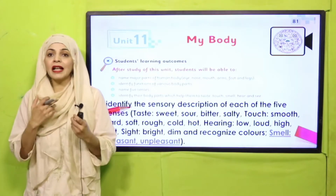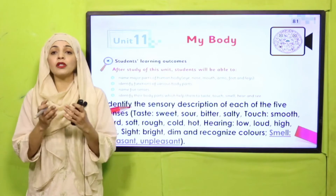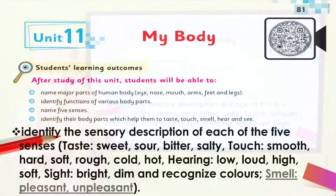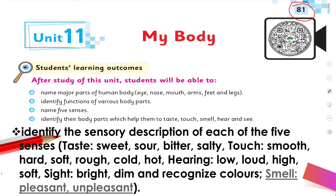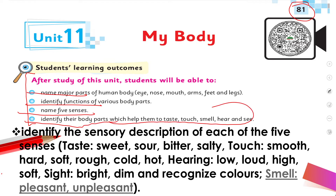So my dear students, let's quickly look at today's student learning outcomes, which are for the parents and teachers to understand. It is on page number 81 of your book. We have covered: naming major body parts, identifying their main functions, naming 5 senses, and identifying the body parts to which these senses belong. Today we will identify the sensory description of smell - sense of smell, which is pleasant and unpleasant.